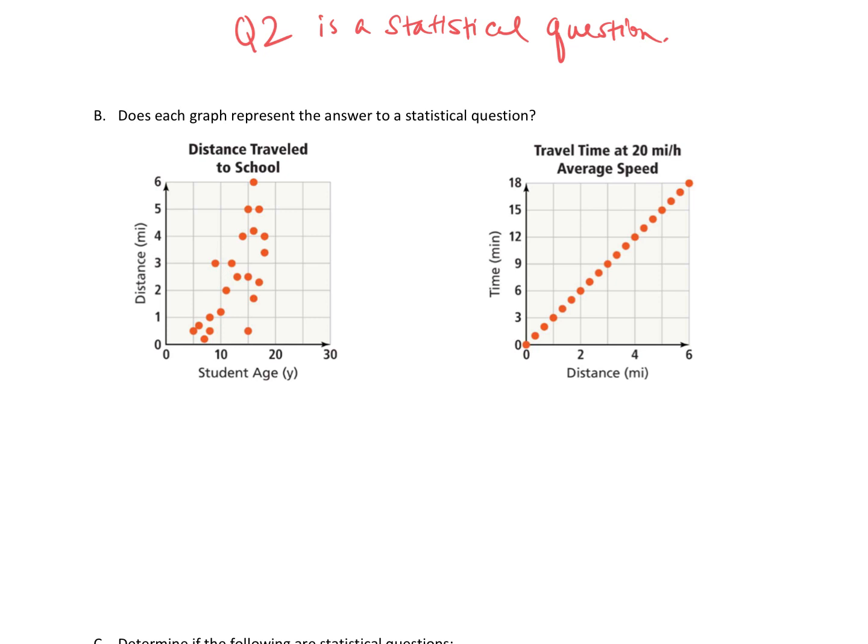Part B, does each graph represent the answer to a statistical question? So in this case, we're not being told the question, but we can see answers to some question, right? So let's ask yourself, well, what was the question being asked that produced these answers? And is that a statistical question?